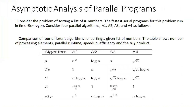Asymptotic analysis of parallel programs is explained here. At this point we have accumulated an array of powerful tools for quantifying the performance and scalability of algorithms. Let us illustrate the use of these tools for evaluating a set of parallel programs for solving a given problem. Often we ignore constants and concern ourselves with the asymptotic behavior of quantities, which yields a clearer picture of the relative merits and demerits of various parallel programs. A comparison of four different algorithms for sorting a given list of numbers is shown in a table with the number of processing elements, parallel runtime, speedup, efficiency, and p·tp product.